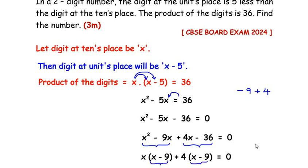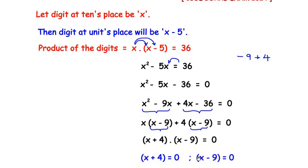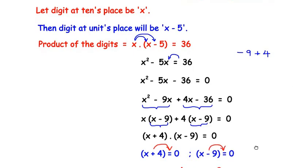Here (x minus 9) is a common factor in both groups, so we pull it out, giving us (x minus 9)(x plus 4) equals 0. We now equate each factor to zero independently: x plus 4 equals 0 and x minus 9 equals 0, which gives x equals negative 4 and x equals 9.